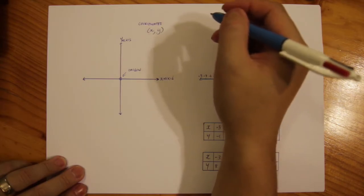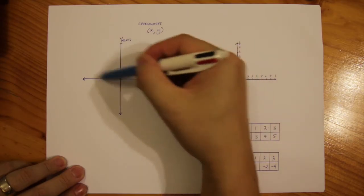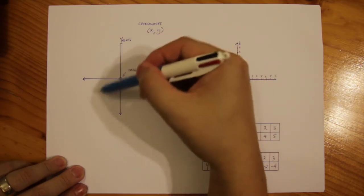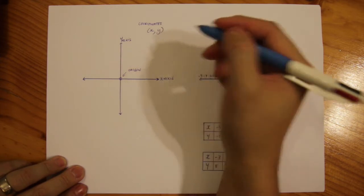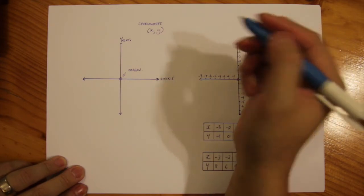Now other references in terms of quadrants, you'll notice that having these two axes makes four quadrants. Sometimes it's a little bit confusing on which one is one, two, three and four.